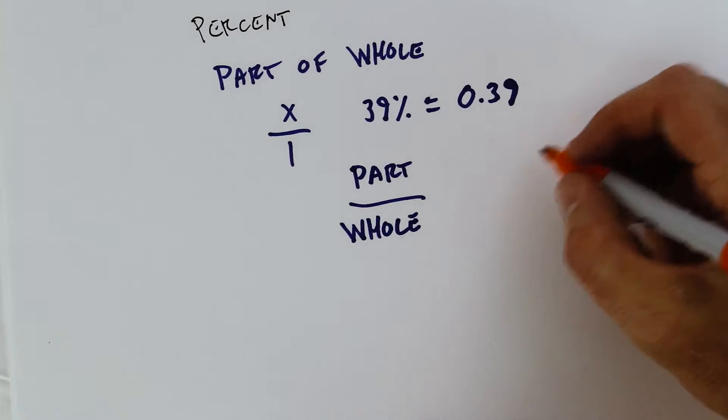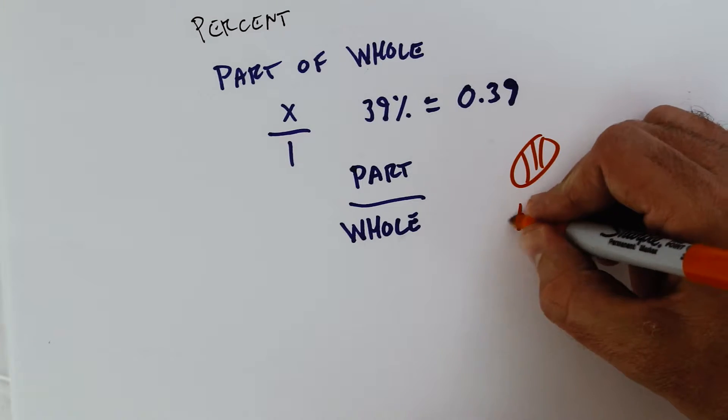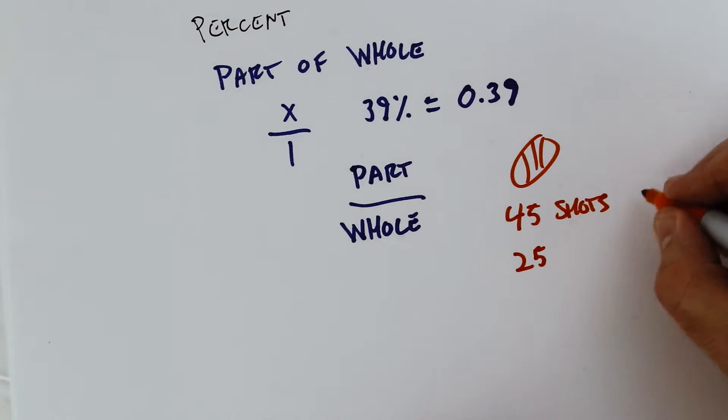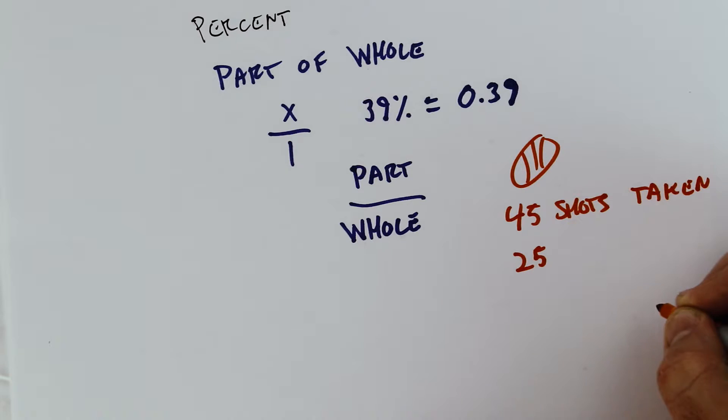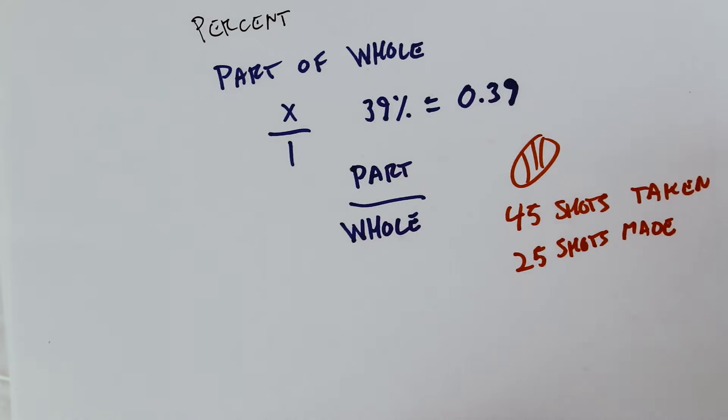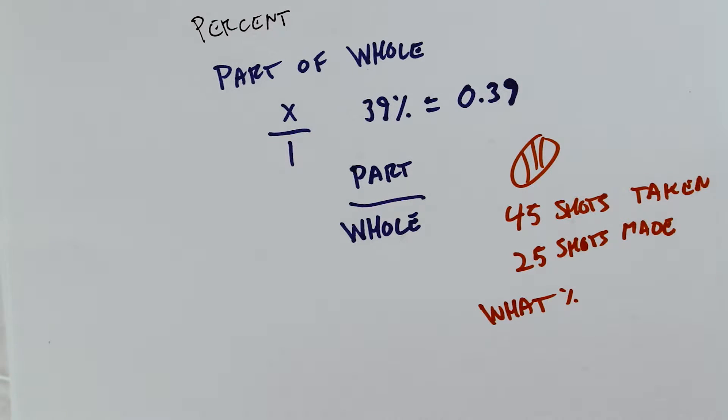So let's look at an example. Let's say you are a basketball player and you take 45 shots during the game and you make 25. So this is shots taken and 25 shots made. And then you're trying to figure out at the end, well, what was my percent? What percent of shots did I make?